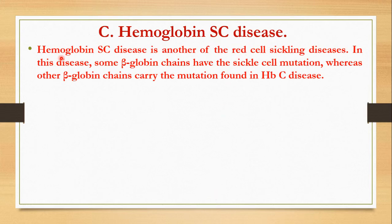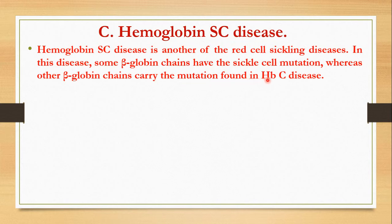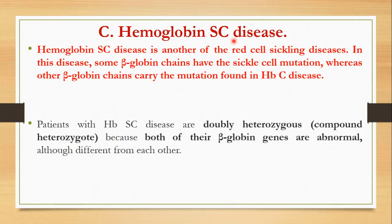Hemoglobin SC disease is another of the RBC sickling diseases. In this disease, some beta-globin chains have the sickle cell mutation, whereas other beta-globin chains carry the mutation found in HbC disease. So as the name SC implies, it is a combination between HbS and HbC — meaning one hemoglobin has HbS and another has HbC. It has both conditions at the same time, but it is milder than HbS (sickle cell anemia).